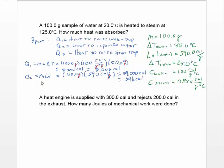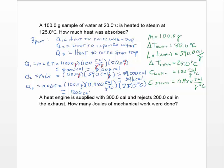For Q3, now that the water has been vaporized into steam, we raise the steam temperature using Q = mcΔT: 100 g × 0.480 cal/g·°C × 25°C, which gives 1,200 calories, or 1.2 kilocalories.